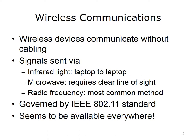This lecture will discuss wireless communication and network hardware. Wireless communication occurs without cabling. Signals are sent via infrared light, for example from laptop to laptop, by microwave, which requires a clear line of sight between the sending and receiving devices, and by radio frequency, which is the most common method used today. All signals are governed by the IEEE 802.11 standard.